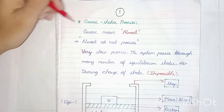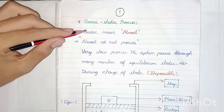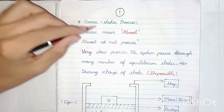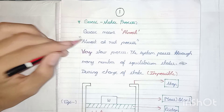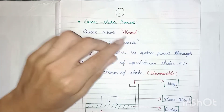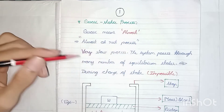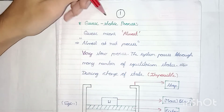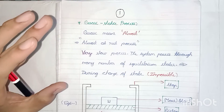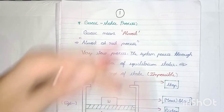Let's find out the meaning of the heading first. The topic is 'quasi-static process.' What is the meaning of quasi? Quasi means almost. And what is the meaning of static?